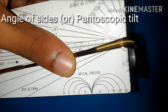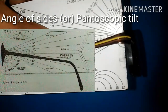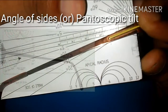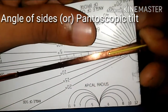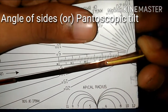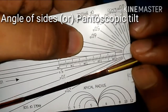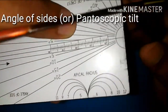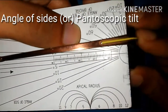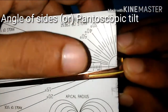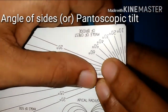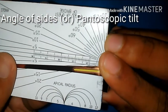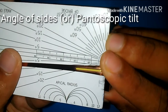The angle of sides is the angle between the back surface of the front plane and the inclination of the sides. To measure that, place the mid of the sides along the vertical line, and the front of the frame along the sides of the ruler, and measure the angle. For this frame it's around 5 degrees.